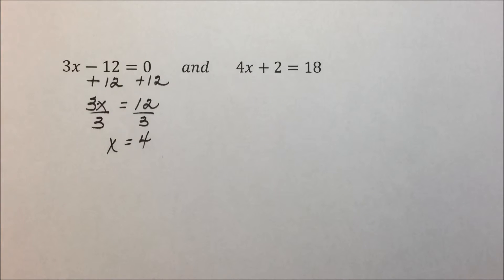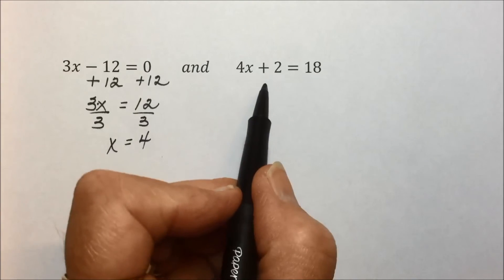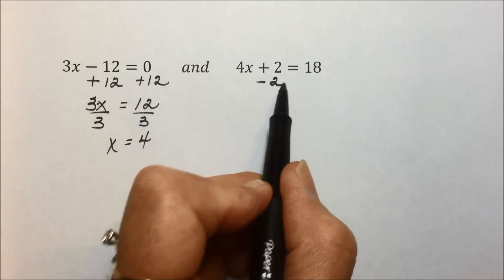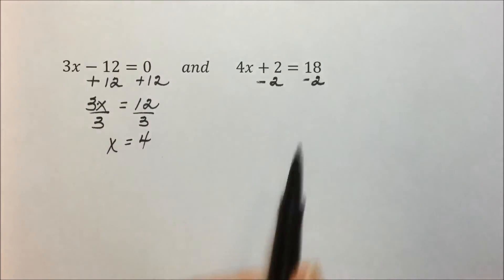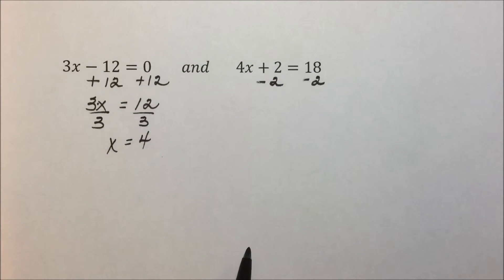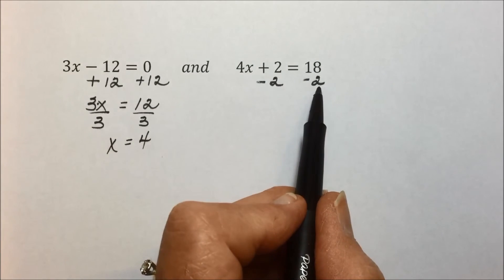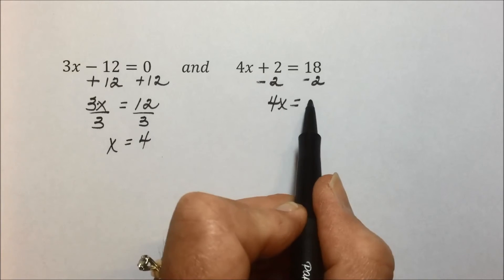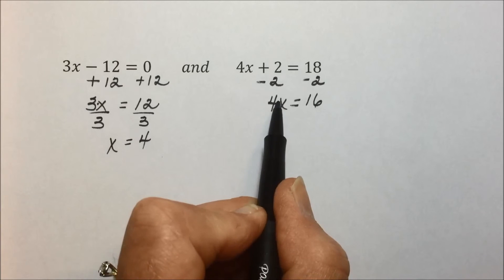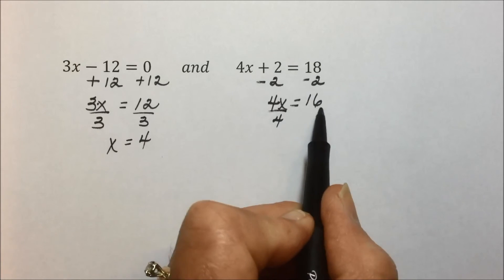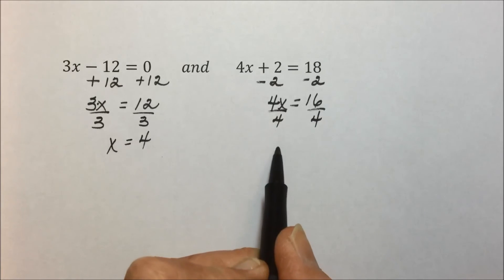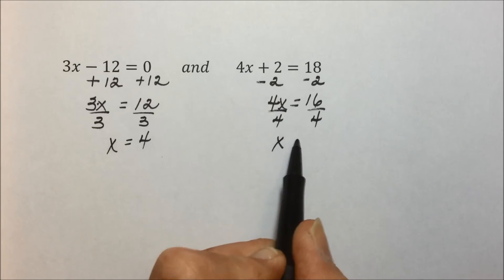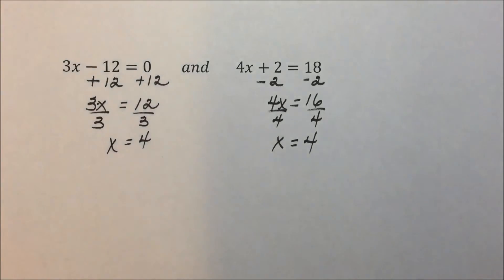That would be one way to verify that they both have the same solution. Or continue on with just simply solving this equation and determine the value of the variable that makes it true. Begin with subtracting 2 from each side leaves 4x equal to 16. Undoing multiplication to get the variable by itself with a coefficient of 1 leaves x equals 4.